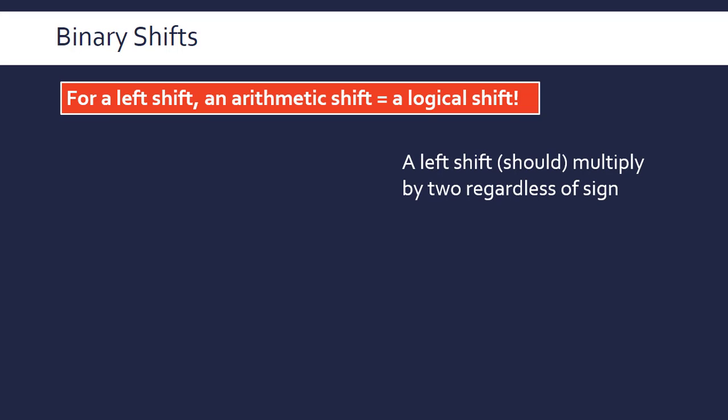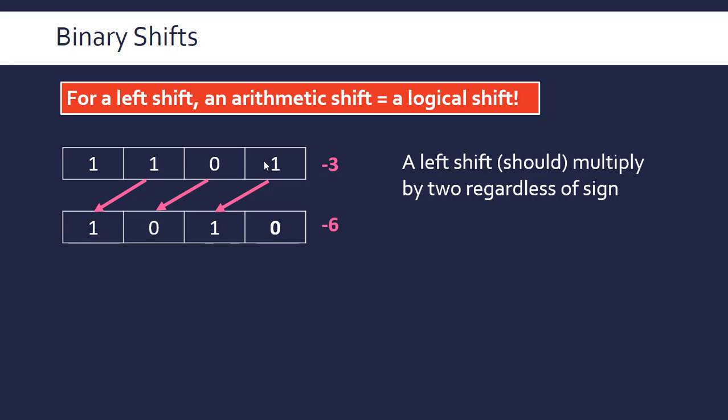Basically, a left shift in the previous video should multiply by 2 regardless of the sign. So if we have minus 3 again as our example in two's complement and we do a left shift on it, we don't have to worry about anything—we just do it as normal, like we would for logical shift, and we should end up